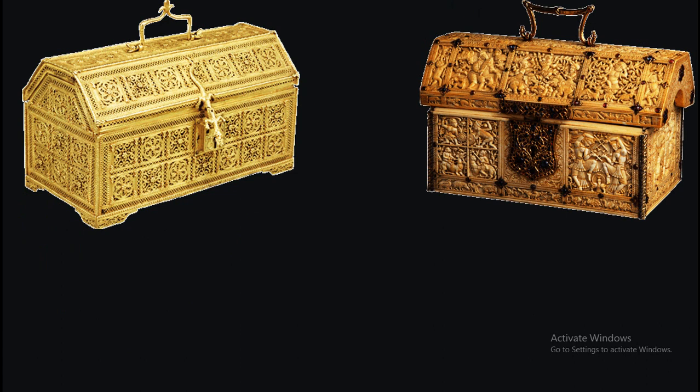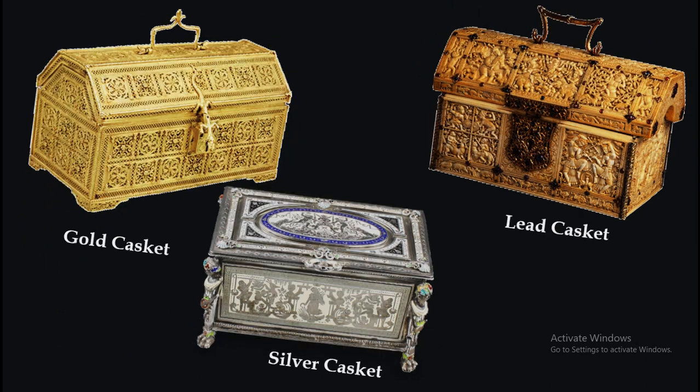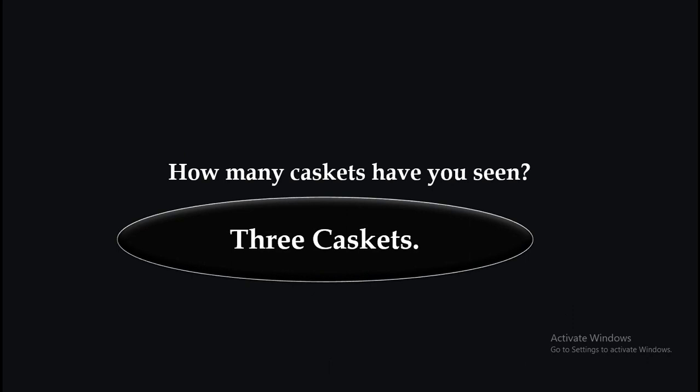So let's get started with the new lesson. Before studying, let me tell you the names of the pictures. Can you see the pictures? What are these? The first one: gold casket. The right one: lead casket. The last one: silver casket. So how many caskets have you seen? Definitely the answer is very easy — 3 caskets. So dear students, our today's topic is the three caskets.